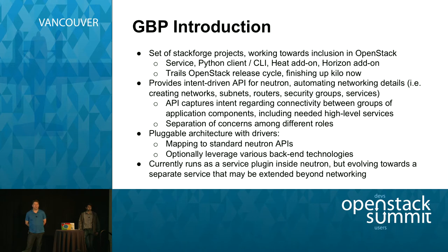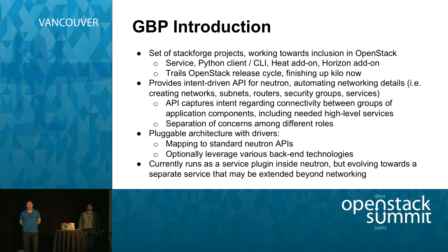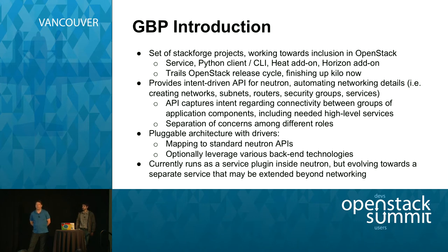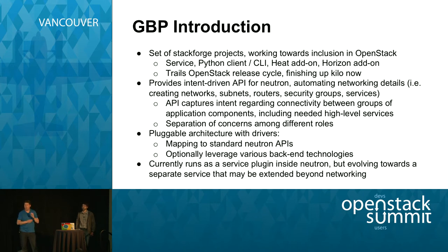The development of group-based policy has been trailing OpenStack release cycles by a month or two. We have a Juno release that's complete with a stable branch and has been packaged in various distributions. We're still working on the Kilo version. We should have a very usable Kilo milestone release packaged for distributions very soon. What we're working with today is on the master branch, and as soon as possible it will start tracking Liberty with a Kilo stable branch as well.